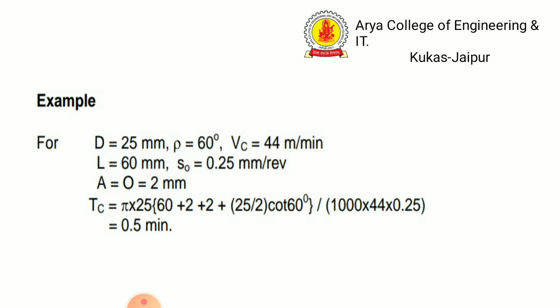A = O = 2 mm for approach and overrun. Putting these parameters into the formula: Tc = (π × 25 × (60 + 2 + 2 + 25/2 × cot60°)) / (1000 × 44 × 0.25) = 0.5 minutes. So 0.5 minutes is the machining time for this drilling operation.